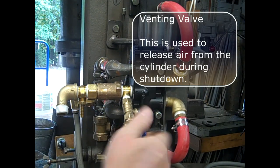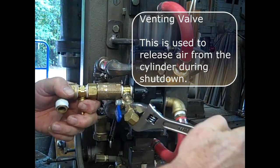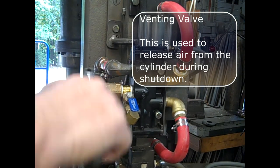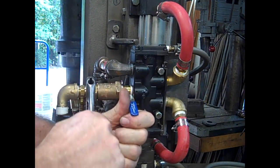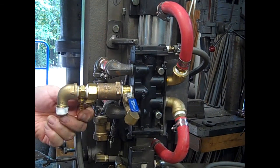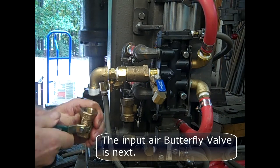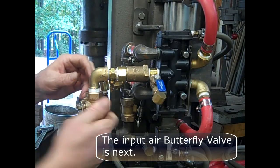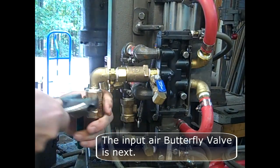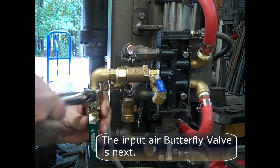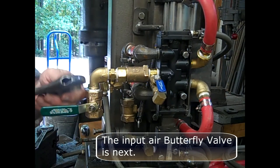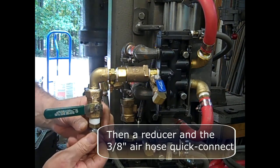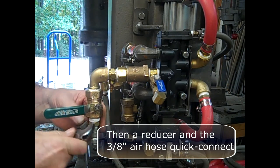Put in the venting valve. This is used to release air from the cylinder during the shutdown procedure. I need to get a small muffler for that. You can buy them. They go into that elbow I put in there. The input air butterfly valve is next. Then a reducer and the three-eighths inch air hose quick connect.